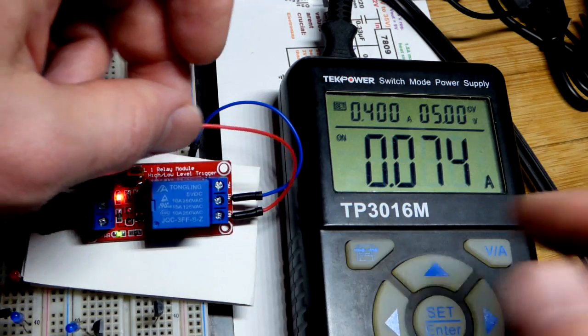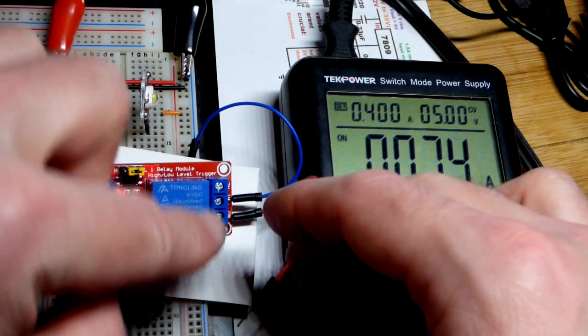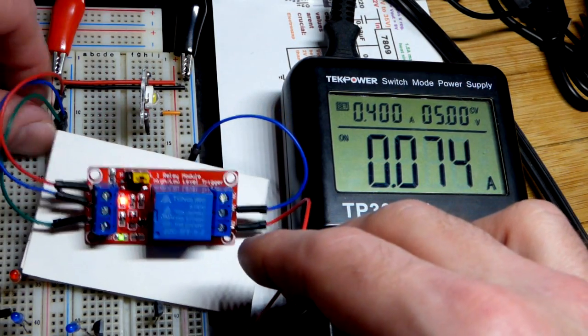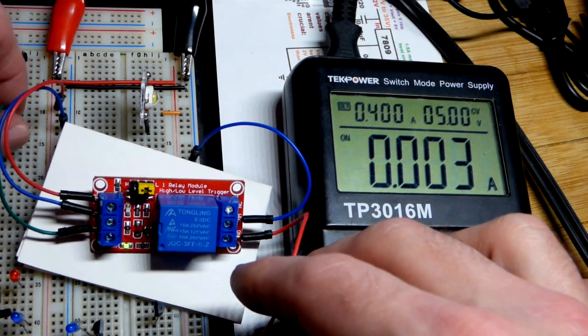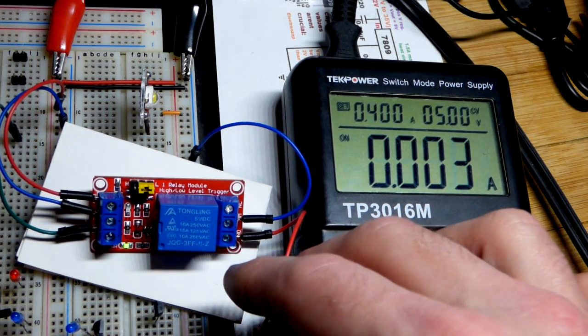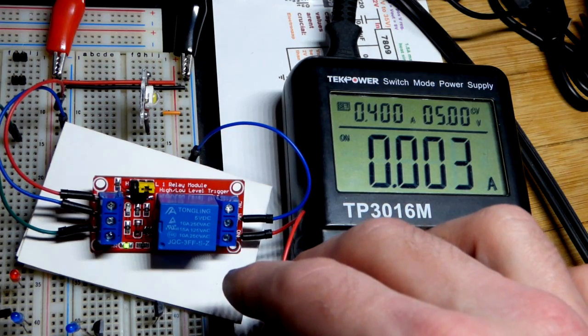And if I release this, now there's no current going through the coil. And we drop that down to 3 milliamps of current.